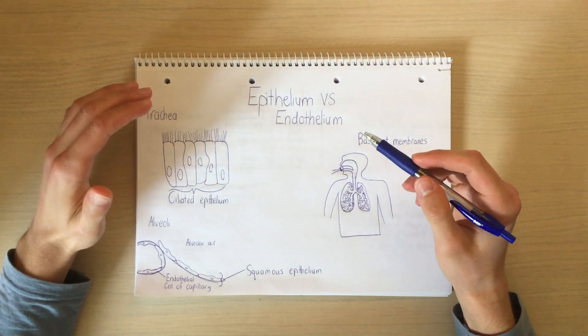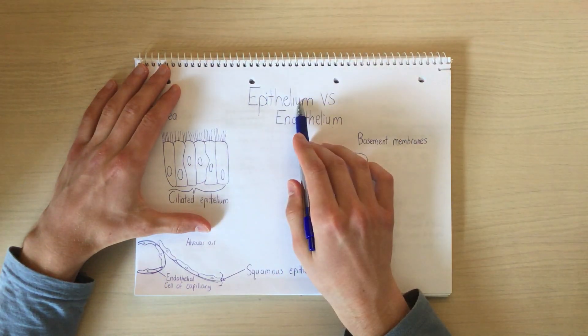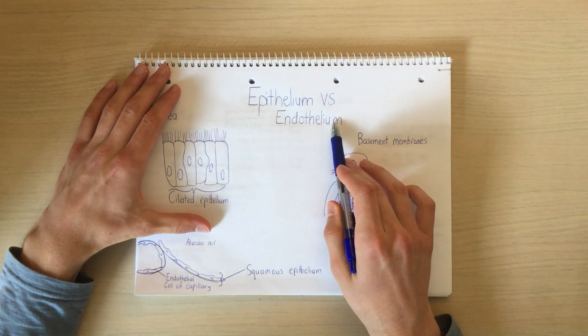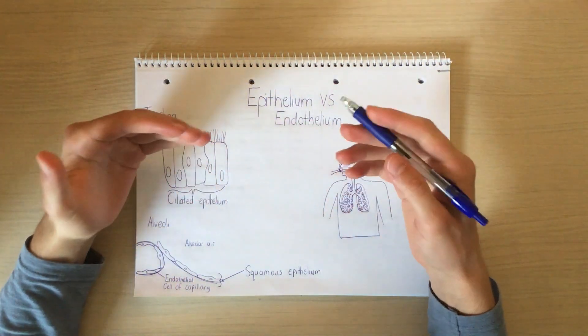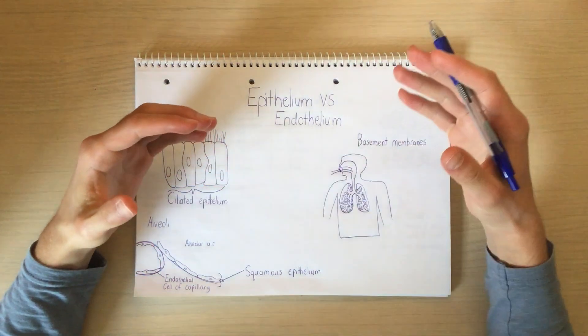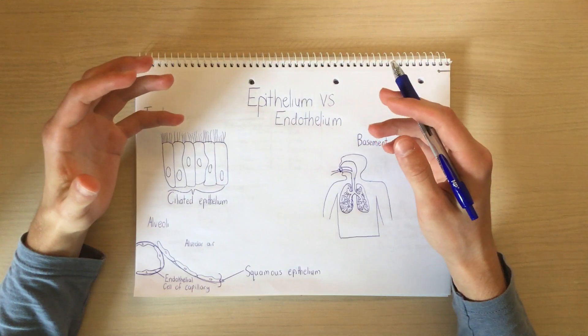In today's video, we're going to be looking at the straightforward way to remember the difference between epithelium tissue and endothelium tissue. So in a nutshell, epithelium tissue is tissue that interacts with the outside world, whereas endothelium tissue does not interact with the outside world.